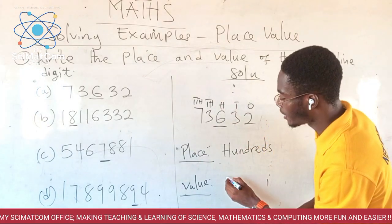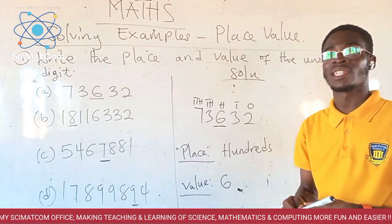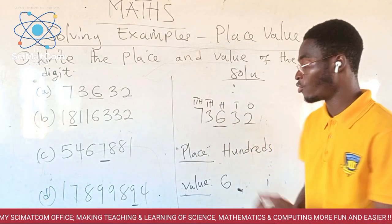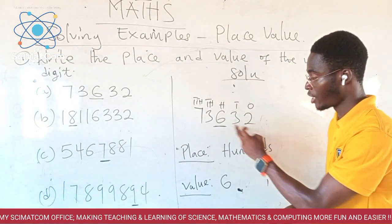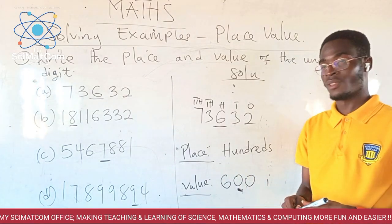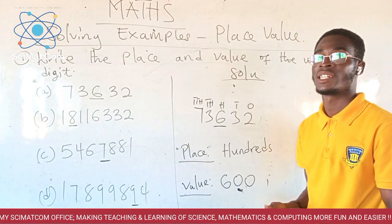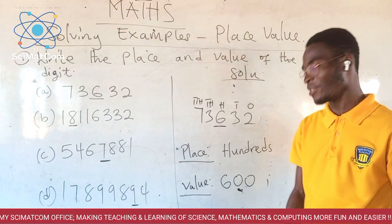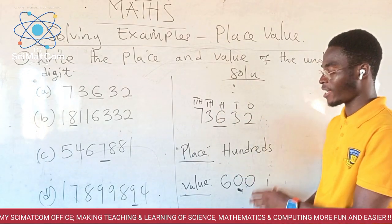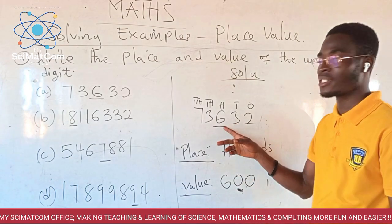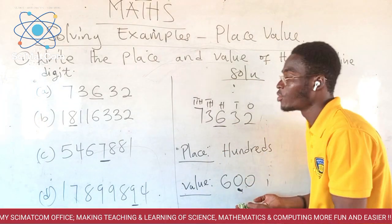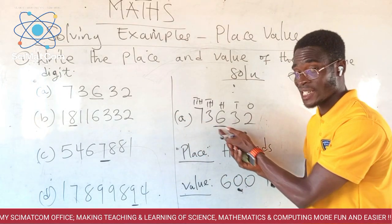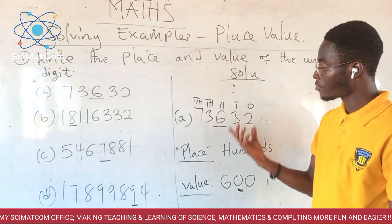The next thing is the value. What is the value of six? We are going to look at the place and name the value. The place is hundreds, meaning this six has the value 600. You write a six and then add two zeros. So the value is 600. So for question A, the place of the underlined digit is hundreds, and the value is 600.